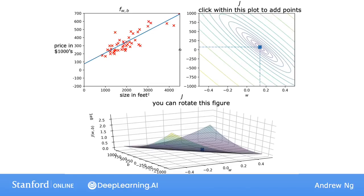Last example. If you look at f of x on the left, this looks like a pretty good fit to the training set. You can see on the right, this point representing the cost is very close to the center of the small ellipse. It's not quite exactly the minimum, but it's pretty close. For this value of w and b, you get this line, f of x.